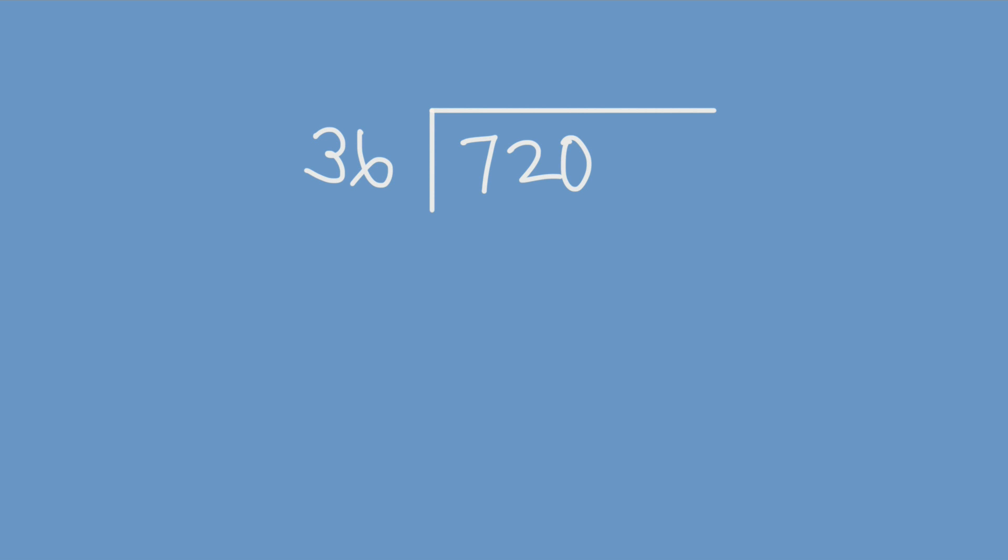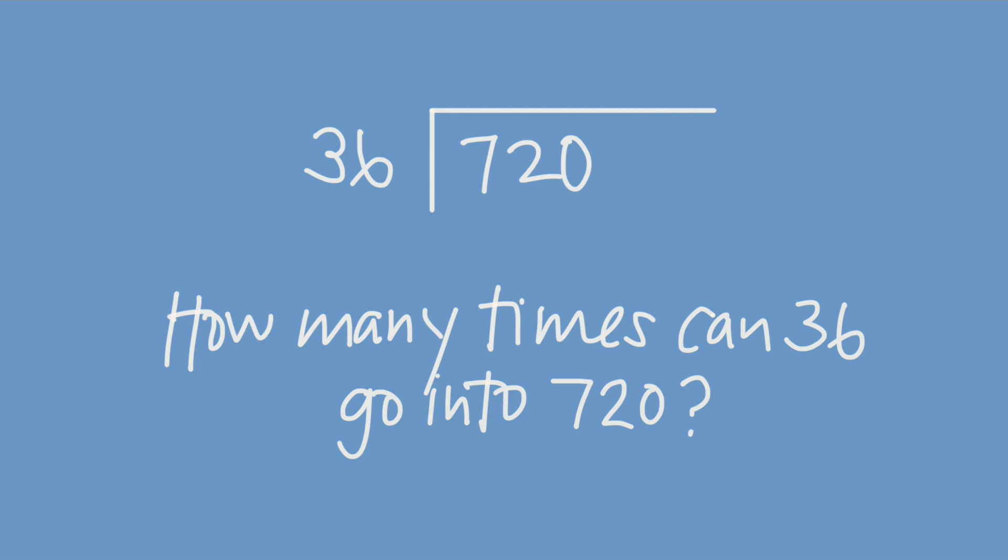But what do we do from here? First, we read the problem. A long division problem reads a little differently than a normal division problem, so instead of asking what's 720 divided by 36, we ask ourselves, how many times can 36 go into 720 without exceeding 720?